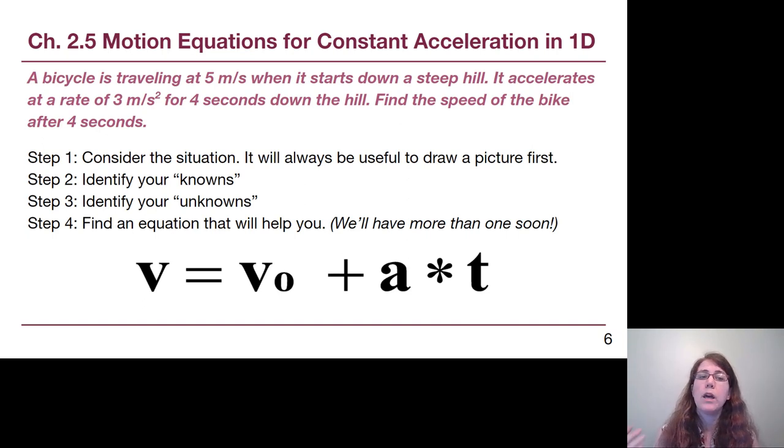So here's our first example. A bicycle is traveling at five meters per second when it starts down a steep hill. It accelerates at a rate of three meters per second squared for four seconds down the hill. Find the speed of the bike after four seconds. I would like you to try this problem on your own. There are some steps here to help us think through how this problem solving should go. So the first step is to consider the situation. Drawing a quick picture, especially showing arrows for where velocity is pointing, where acceleration is pointing, is going to be really useful for us.